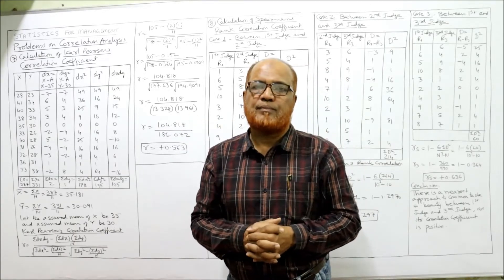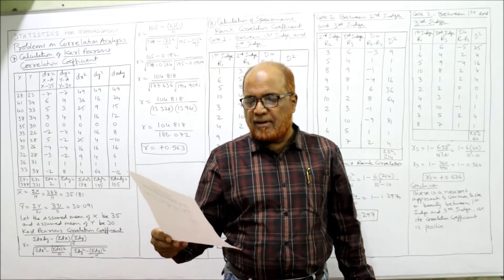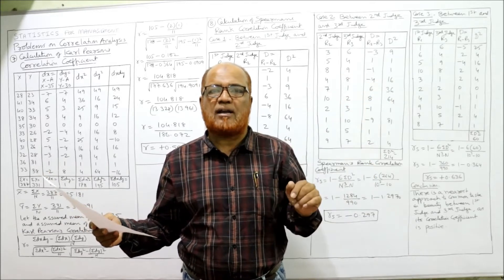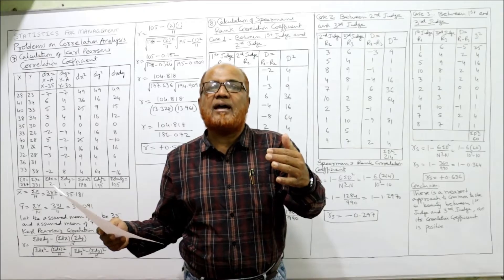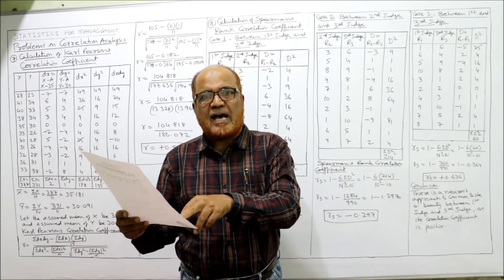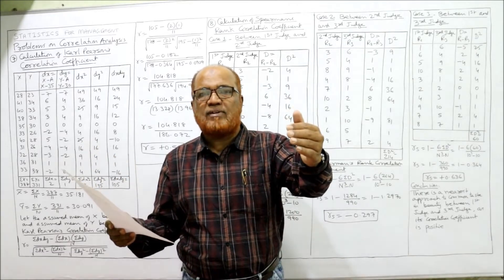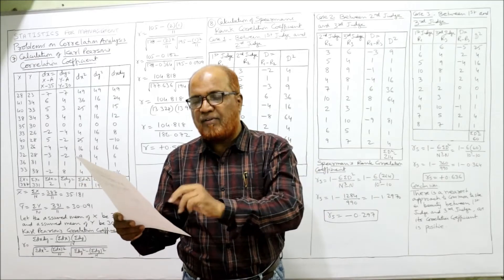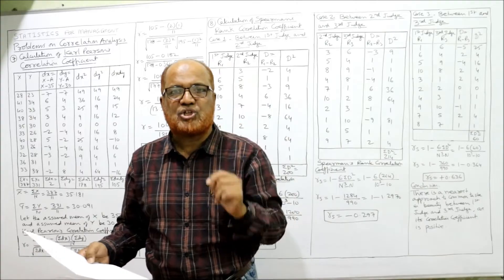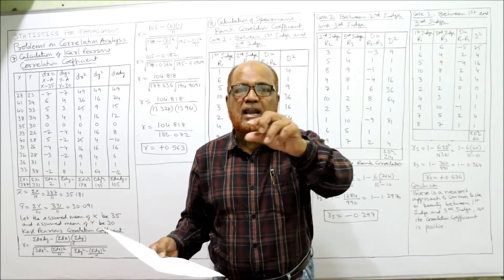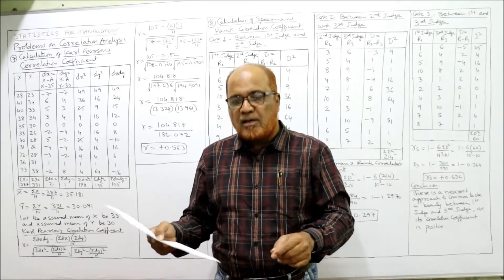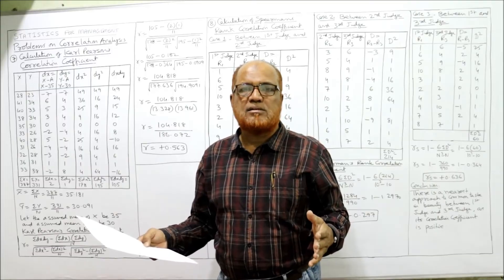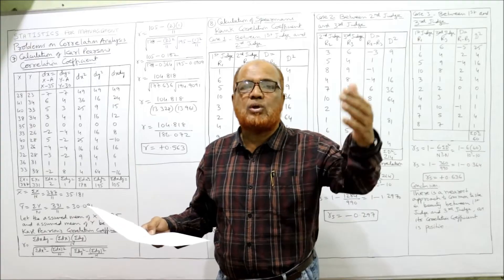Problem number eight: ten competitors in a beauty contest are ranked by three judges in the following order. A beauty contest was conducted with 10 participants and 3 judges. The first judge gave ranks: 1, 6, 5, ... (10 ranks total). The second judge gave ranks: 3, 5, 8, 4, 7, ... and the third judge gave ranks: 6, 4, 9, 8, 1, and so on. Different judges give different ranks to different contestants.